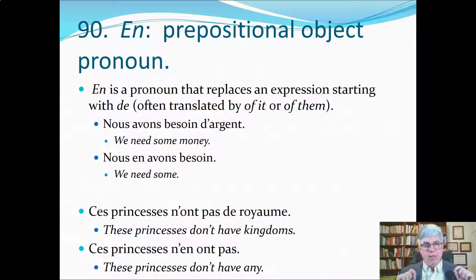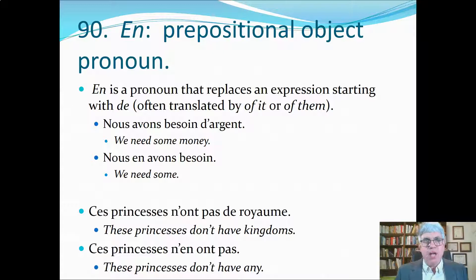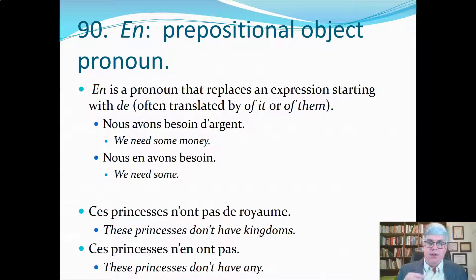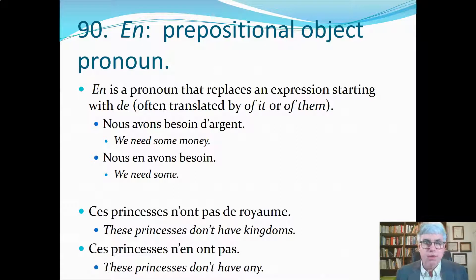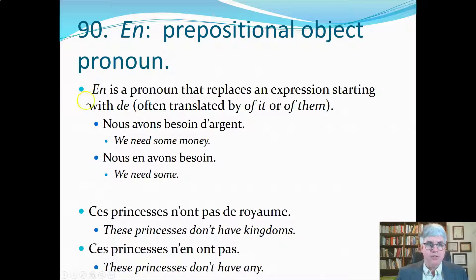We're going to start off with probably the most difficult use of the word 'en' as a pronoun. We call it a prepositional object pronoun because it replaces a prepositional phrase. These are sometimes called strange object pronouns — 'en' and 'y'. When 'en' is used as a pronoun, it replaces an expression starting with 'de'.